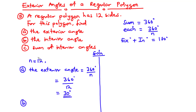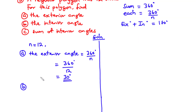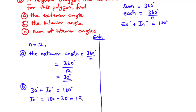For the interior angle, we use the relationship: exterior angle plus interior angle equals 180 degrees. So the interior angle equals 180 minus 30 = 150 degrees.